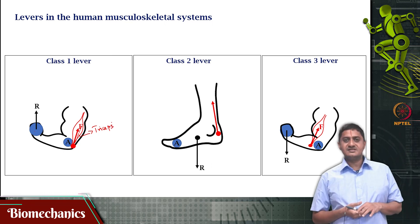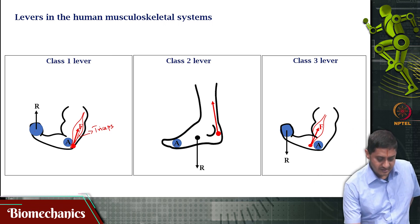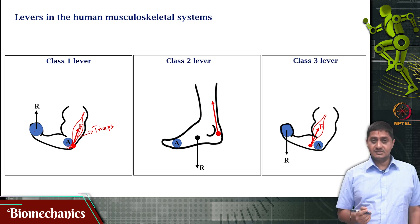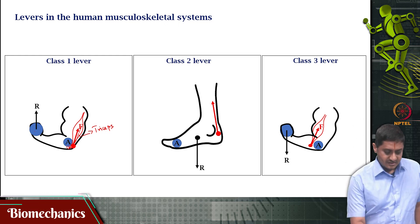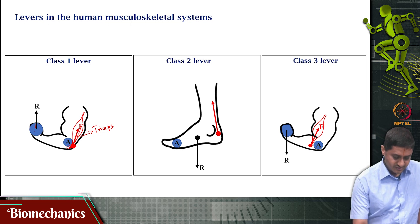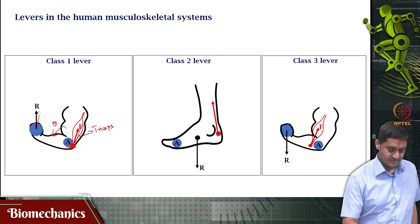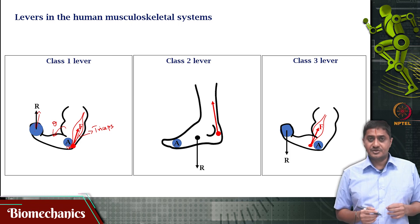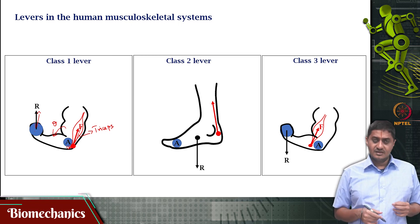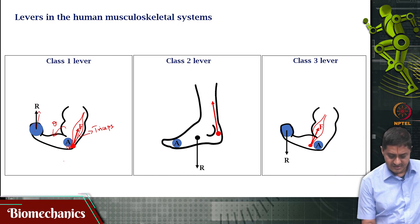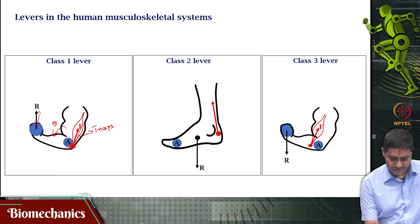The axis of rotation in this case is the elbow joint, but force is applied here at this point, and the resistance that needs to be overcome — this angle will have to be increased — is acting in this direction. So in this case, the axis of rotation is between the force and the resistance.